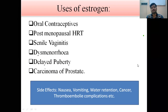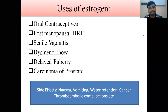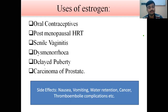The uses of estrogen are very significant. It has applications as an oral contraceptive and as postmenopausal hormone replacement therapy, which is extremely important for menopausal women — generally those aged 45 to 50 suffering from postmenopausal problems. It can also be used in senile vaginitis, dysmenorrhea, delayed puberty, and carcinoma of the prostate. Side effects include nausea, vomiting, water retention, cancer, and thromboembolic complications.